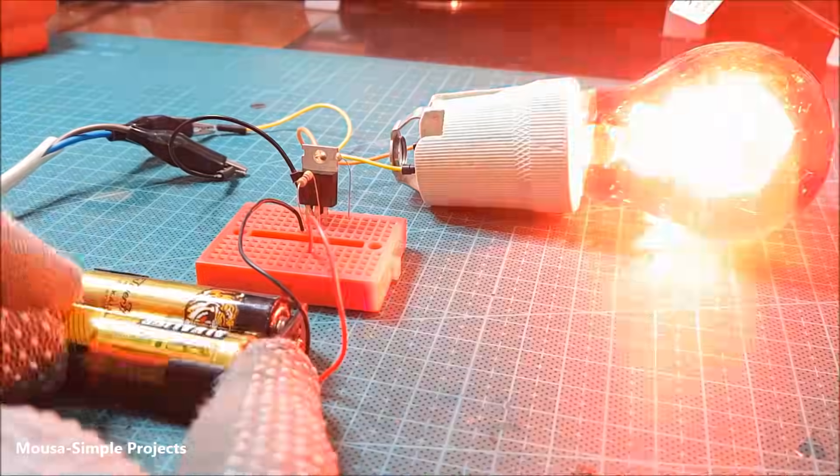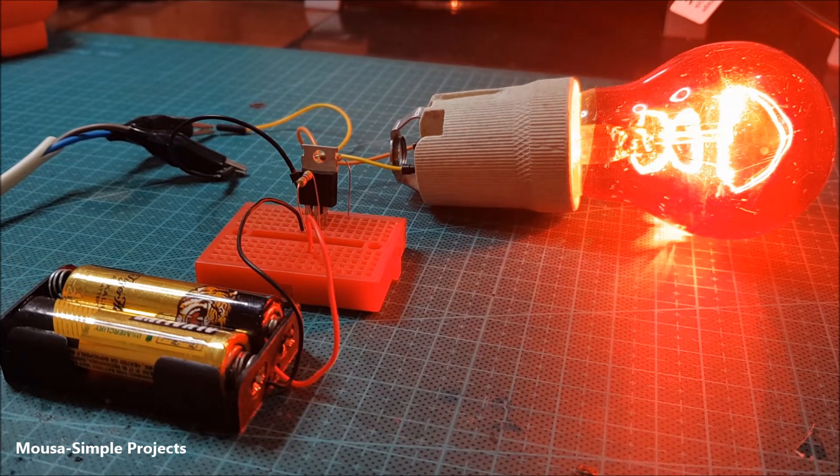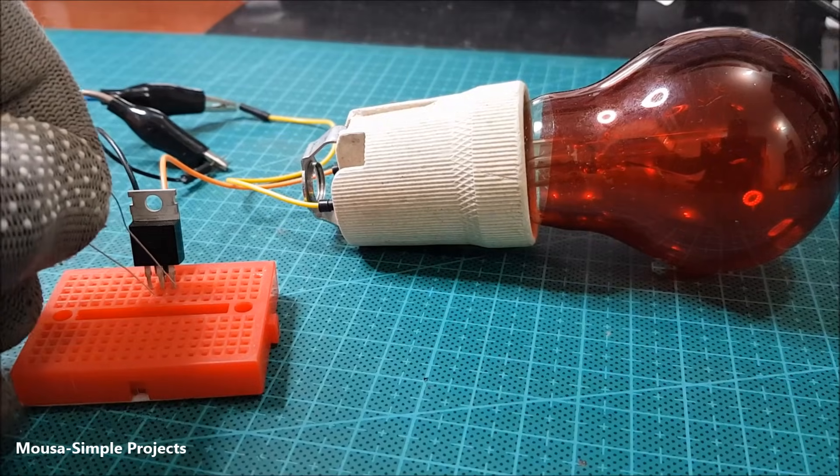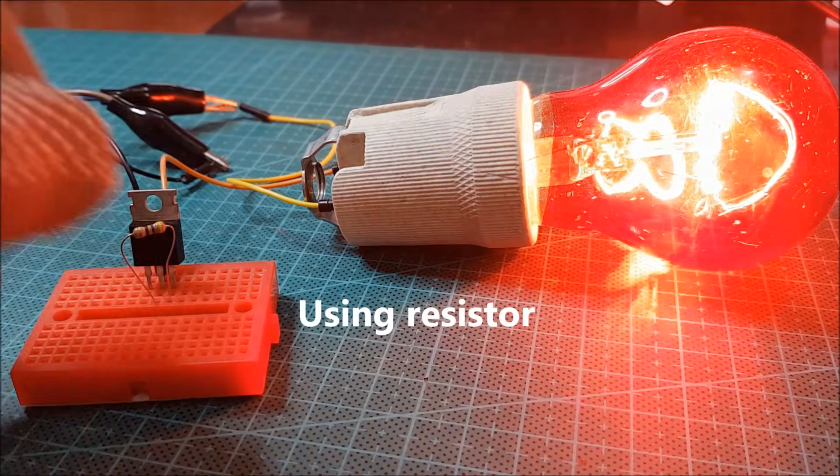Number one, connecting a DC voltage between gate and anode 1. Number two, connecting the gate to anode 2.